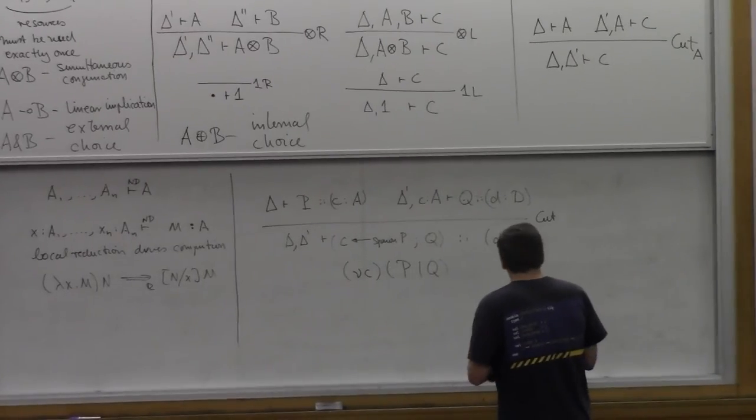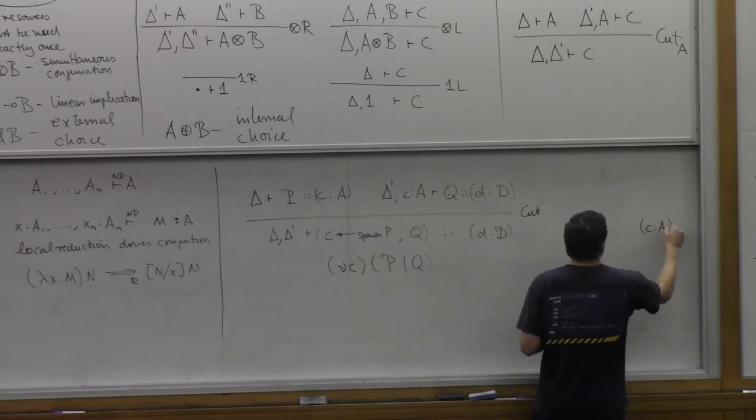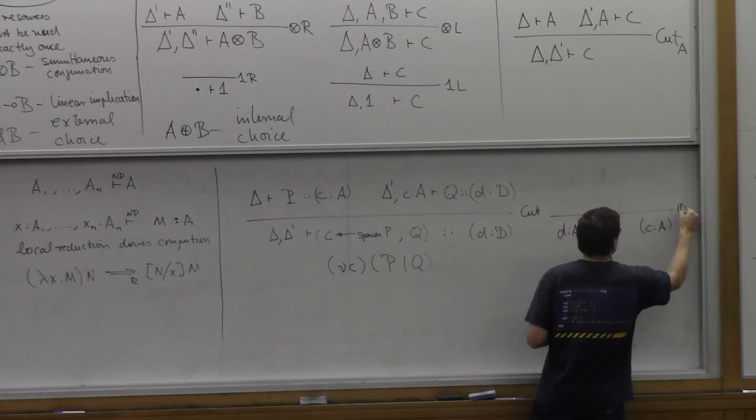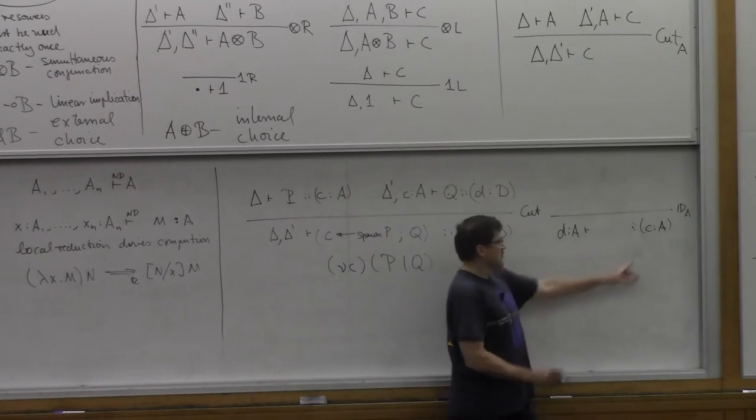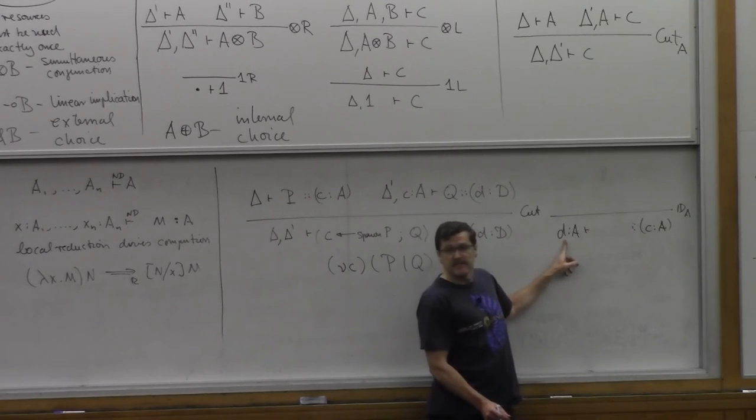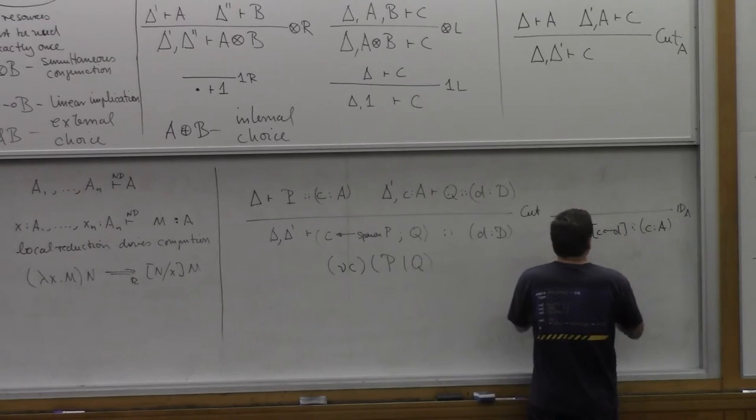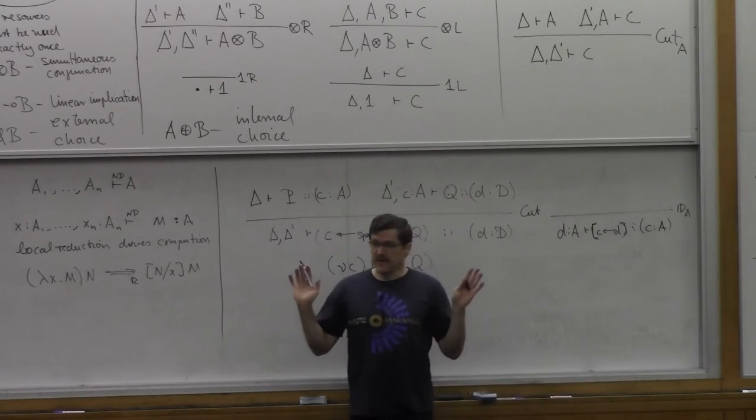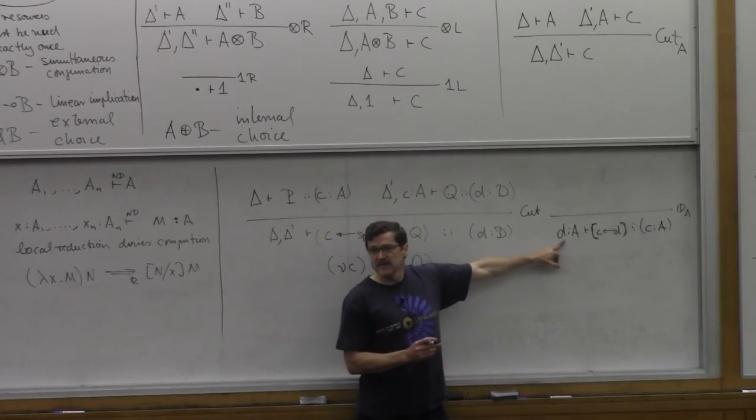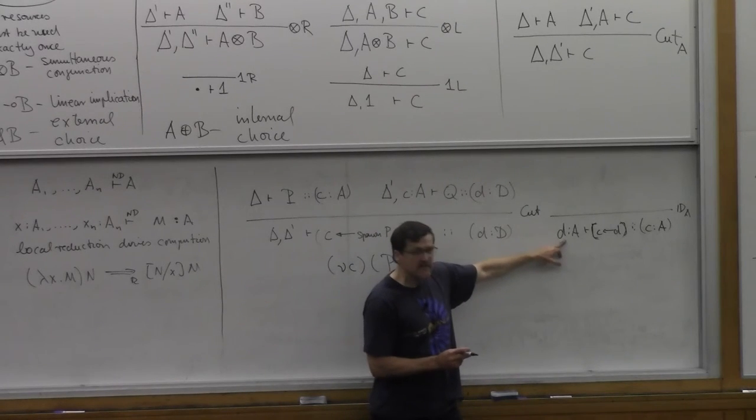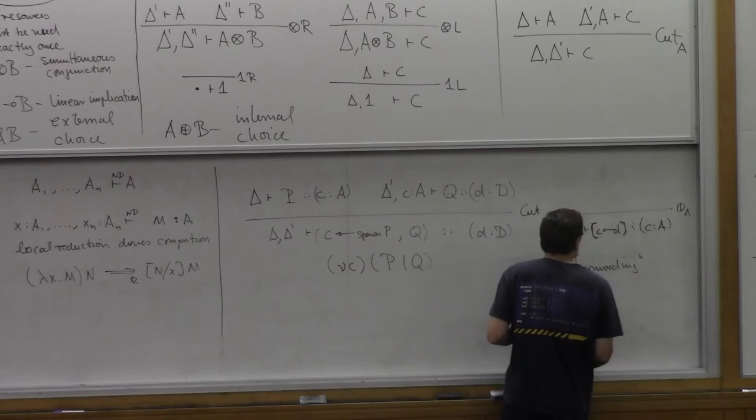Let's do identity while it's up there. So what does the identity do? We're offering C along A and we have D along A and we have the identity of type A. So think about it this way. We have to write here a process which claims to provide A and it can use D of type A. So what we do is essentially we forward any client request to D. So we say we implement C by D.